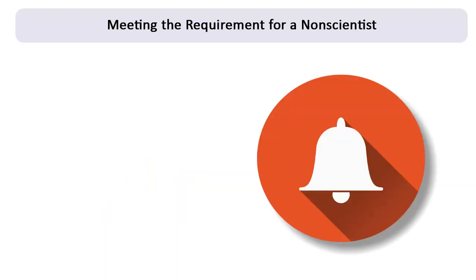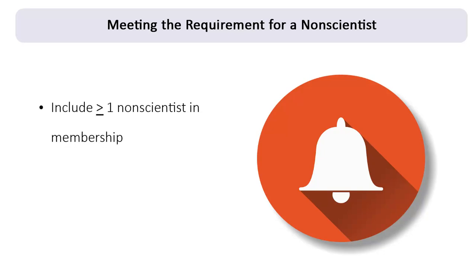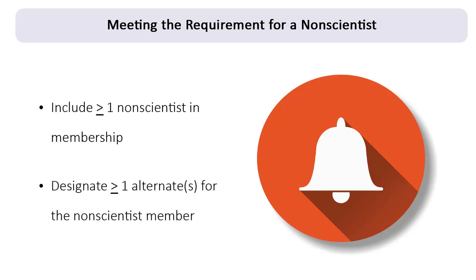To help meet the requirement that a non-scientist member be present, IRBs may include more than one non-scientist in their membership, or designate one or more alternates for the non-scientist member, who can fill in when that member is not available. Although the regulations require that the IRB membership also include at least one scientist and one unaffiliated member, those members do not have to be present for the purpose of meeting quorum requirements.